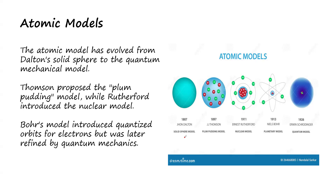So after the plum-pudding model, it described the electrons and the protons in the solid sphere without actually describing whether the atom has a nucleus or not. Then the next one is Rutherford, 1911 — the scientist that came up with the nuclear model, that atoms contain a nucleus that accommodates protons and neutrons. Then of course Niels Bohr came up with the idea that electrons are particles that move around the nucleus — that the electrons are quantized in orbits — but this was later refined by Erwin Schrödinger in the quantum model.